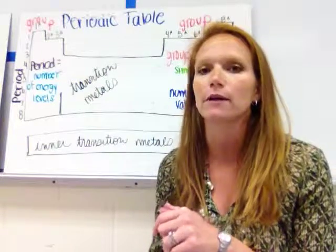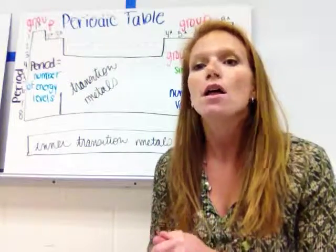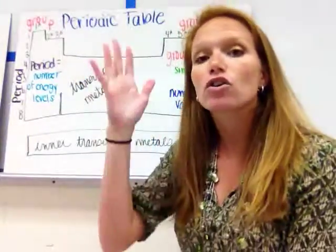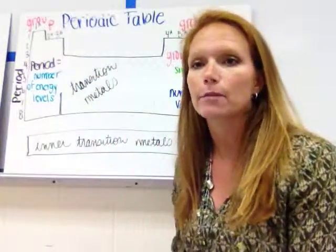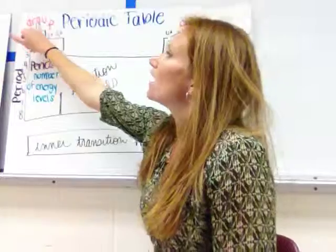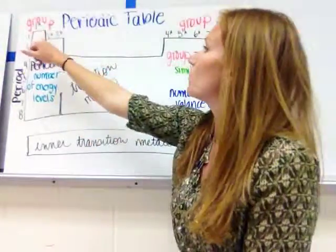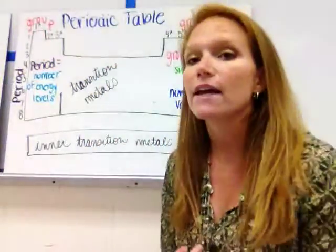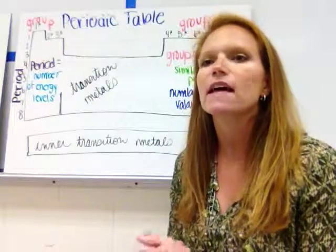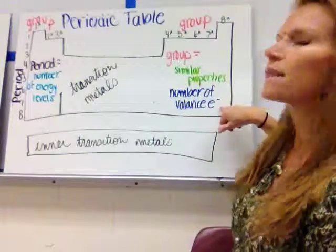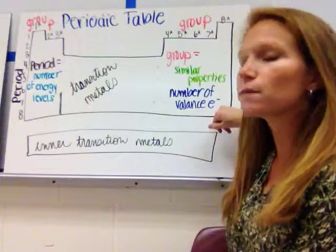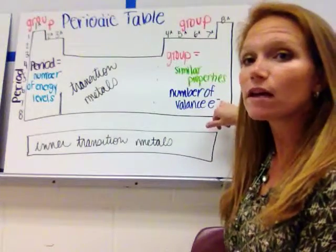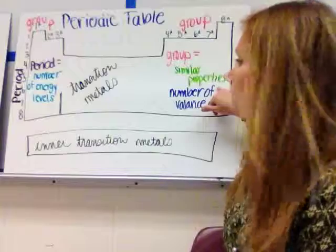There are a lot of different numbers placed around the periodic table. The most important are the group numbers across the top. In the A groups — group 1A through 8A — those group numbers tell you how many valence electrons the elements in that column have. Elements in the same column share similar properties.